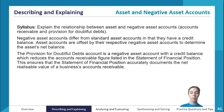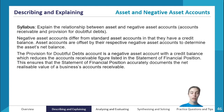Asset accounts are offset by their respective negative asset accounts to determine the asset's net balance. The provision for doubtful debts account is a negative asset account with a credit balance, which reduces the accounts receivable figure listed in the statement of financial position.